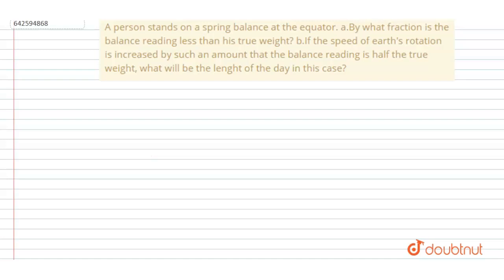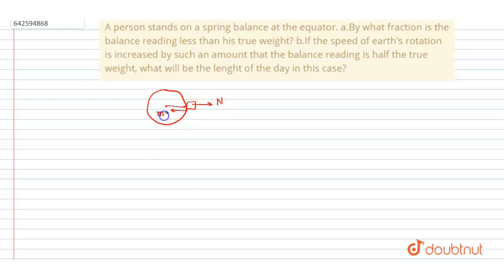Let's see how the length of the day decides the reading of the spring balance. The spring balance reads the normal reaction. At the equator, we have the normal reaction, the weight mg acting downward, and from the Earth's frame there will be a centrifugal force. So the spring balance reading equals the normal reaction.